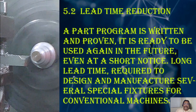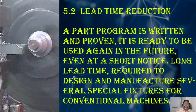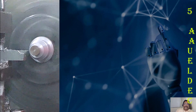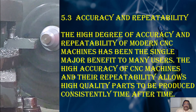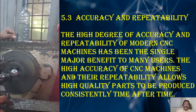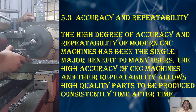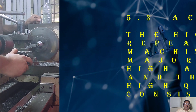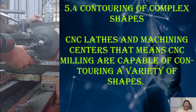Lead time reduction: once a part program is written and proven, it is ready to use again in the future, even at short notice — unlike the long lead time required to design and manufacture several special fixtures for conventional machines. Accuracy and repeatability: the high degree of accuracy and repeatability of modern CNC machines has been the single major benefit to many users. The high accuracy of CNC machines allows high-quality parts to be produced consistently, time after time.